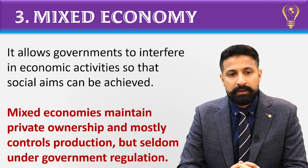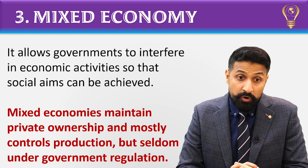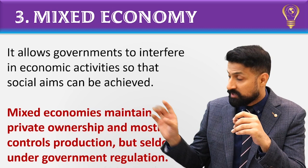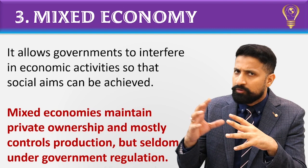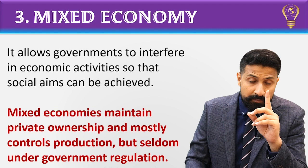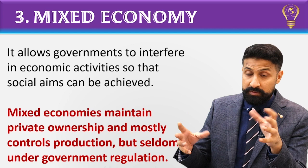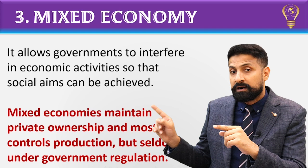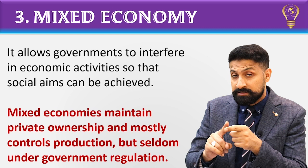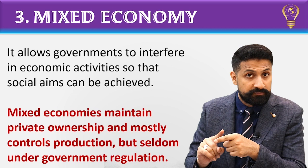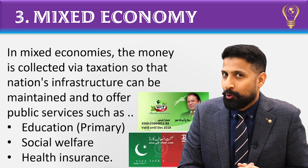Mixed economies maintain private ownership and most control of production is seldom under government regulation. In a mixed economy, production is normally done by private ownership, private businesses, private firms — as I explained in the capitalist economic system where government institutions took full control of production and distribution. In the command economy or planned economy, everything was in government hands. But here, production is done by private firms — however, under strict rules, regulations, and supervision of the government.